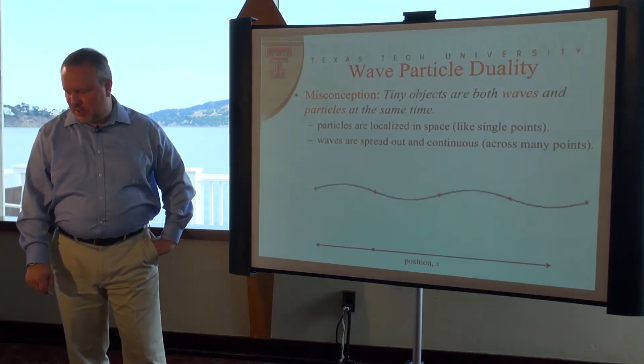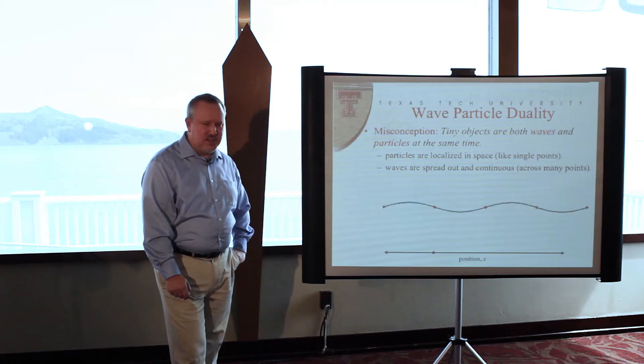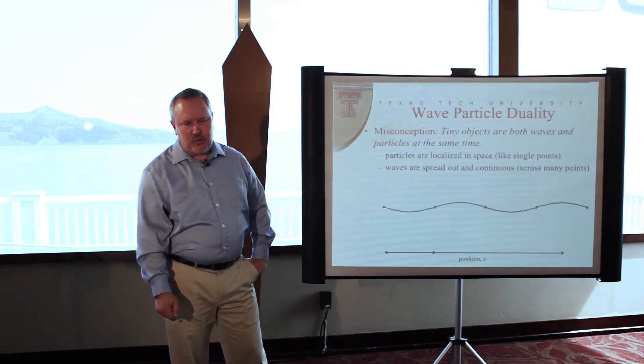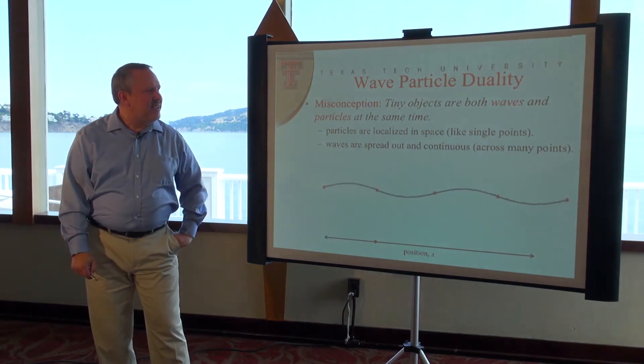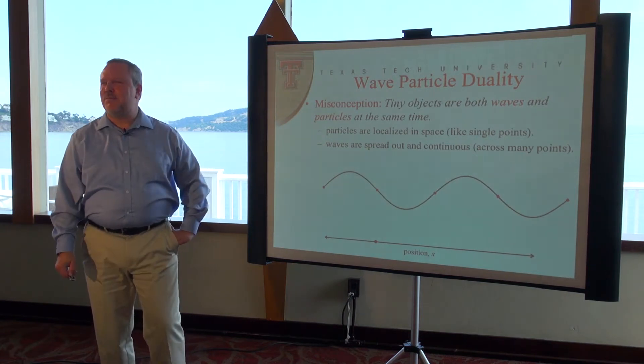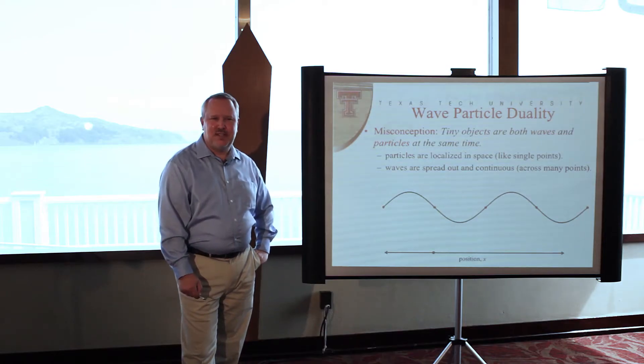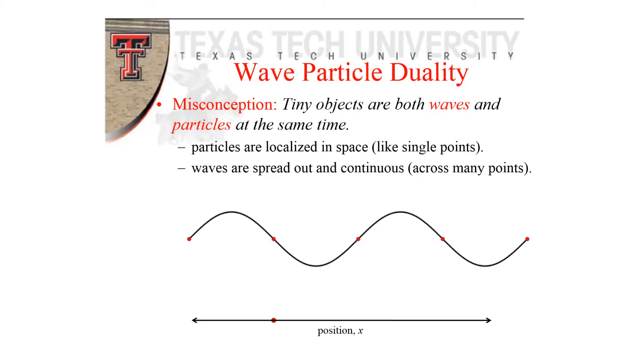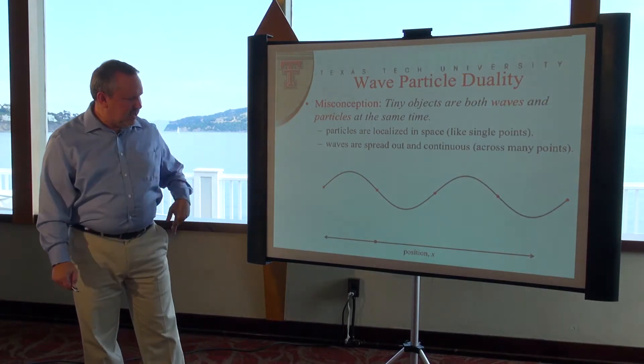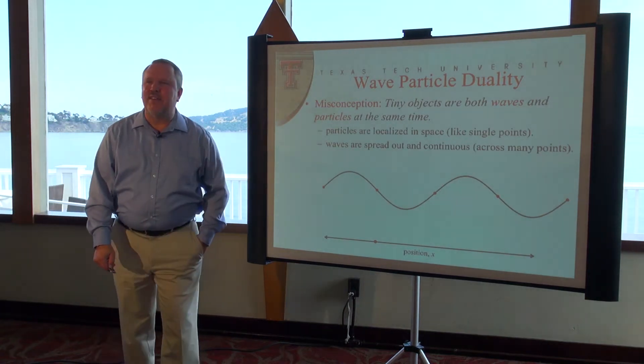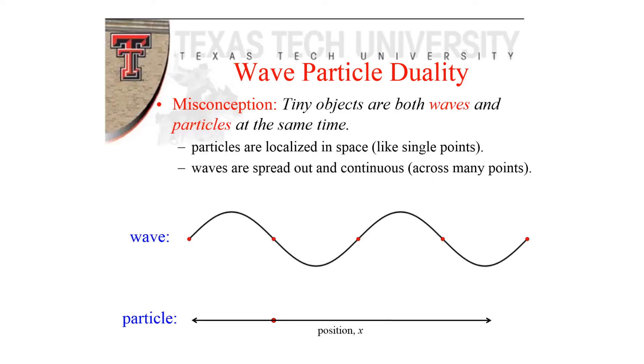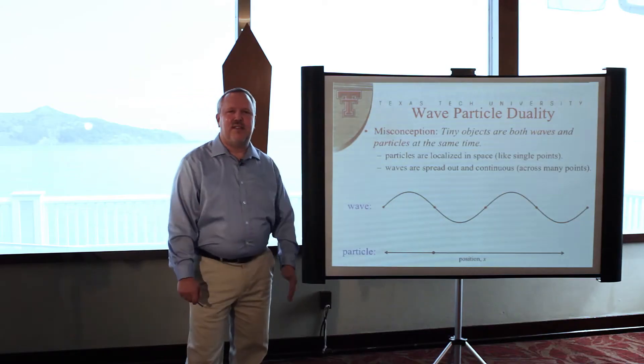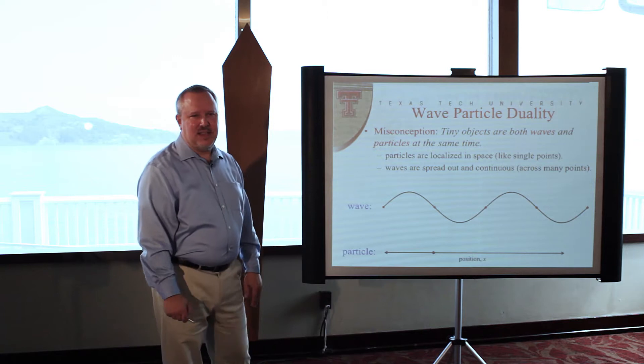One of the first things we learn about quantum physics is that small objects are supposed to be both waves and particles. It's so-called wave-particle duality. Now, sometimes this gets overstated as follows: Tiny objects are both waves and particles at the same time. My own view is that that's a bit of an overstatement. These things are very different from each other, they're not consistent. A particle has a very localized position in space, like this point here in the line at the bottom of the screen in 1D. A wave, on the other hand, is delocalized throughout space. It has amplitude at all points in space.